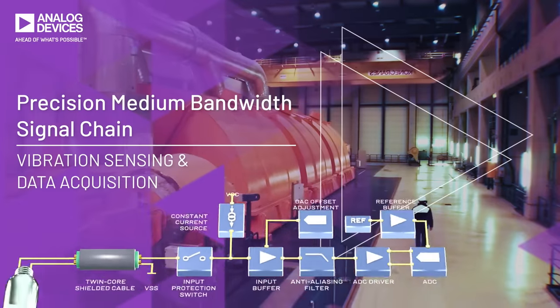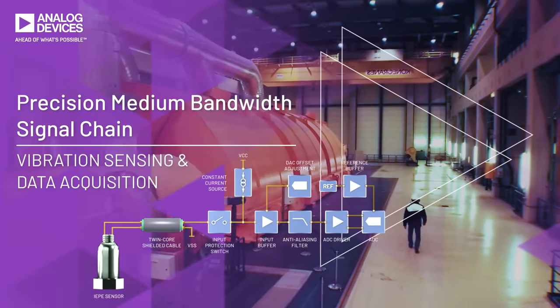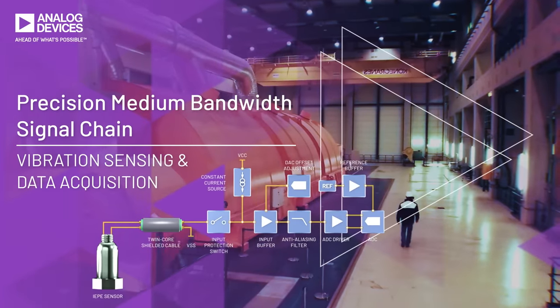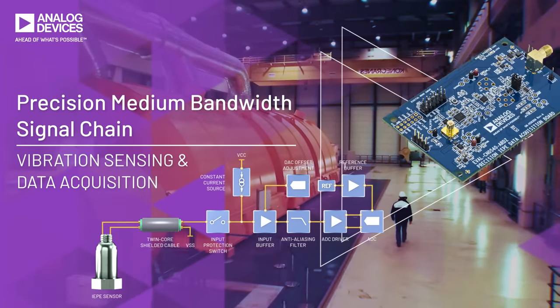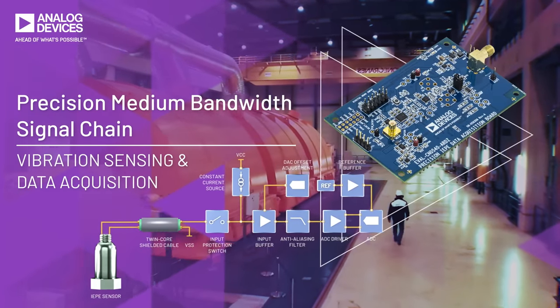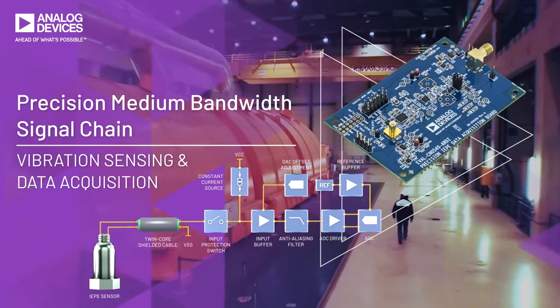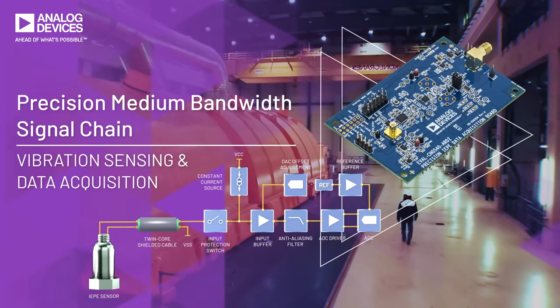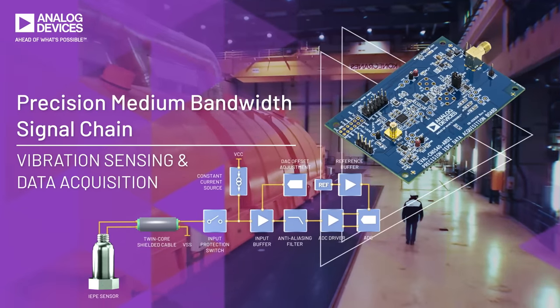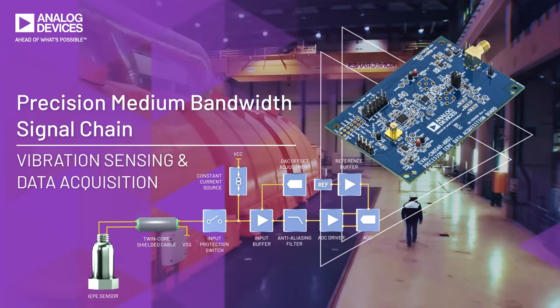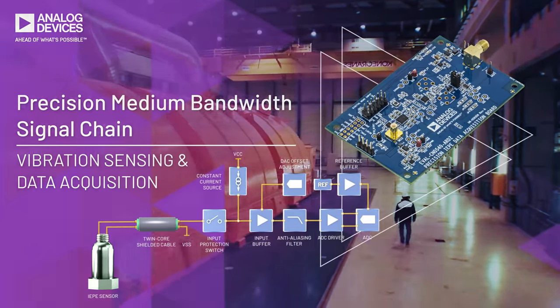ADI's Precision Medium Bandwidth Signal Chain provides a fast track for prototyping your system and is supported by open source software to provide out-of-the-box usable data to start your machine learning journey.